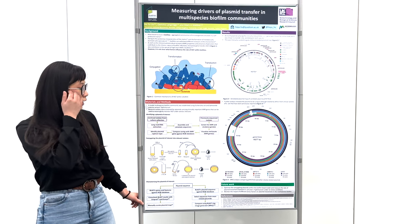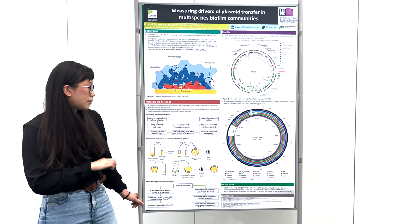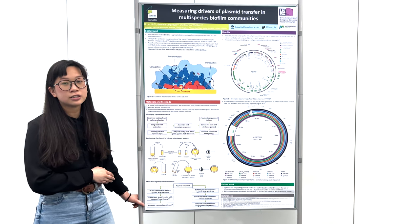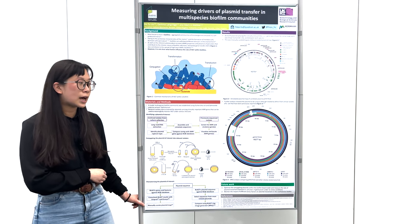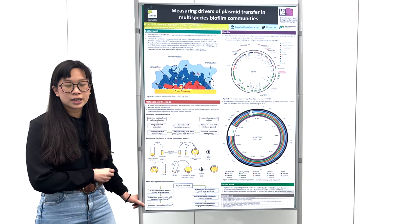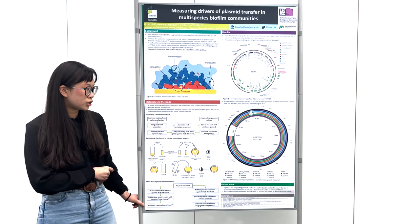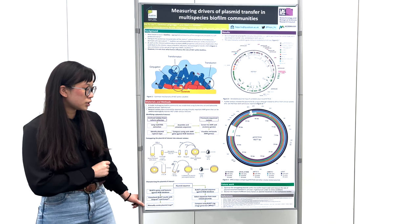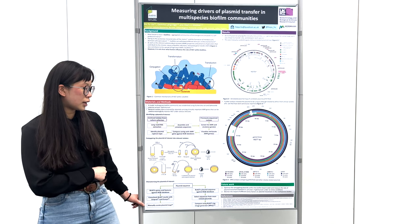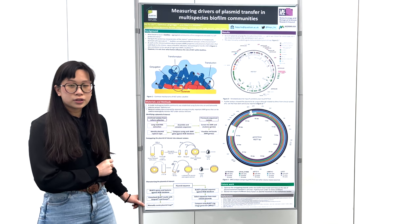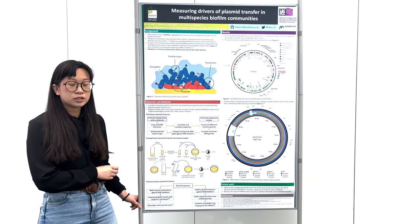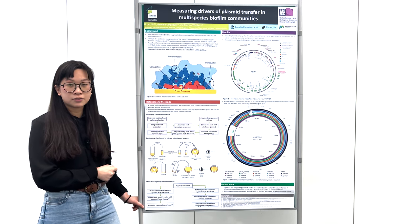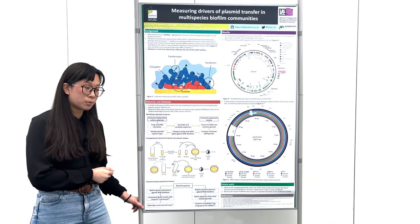I did DNA extractions on this panel of isolates, assembled and annotated the sequences, and then screened for various AMR and virulence genes. I visualized the location of these genes in the sequences to identify whether the genes existed in the plasmid or were in the chromosome, and if in a plasmid, I identified the plasmid replicon type.